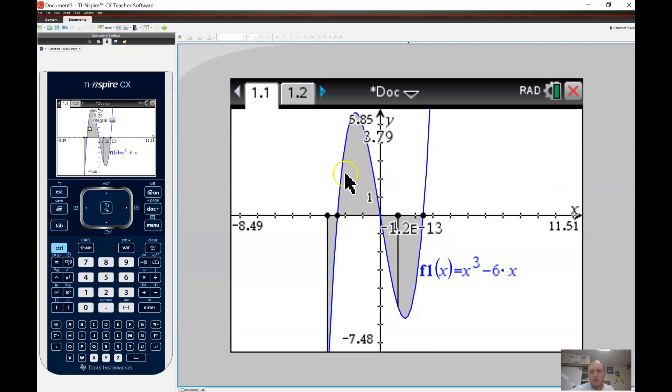Okay, and I want it from root 6 to root 6. So notice that's roughly about here to about here. Okay, and what you'll notice about these two areas is they're mirror images of each other, right?